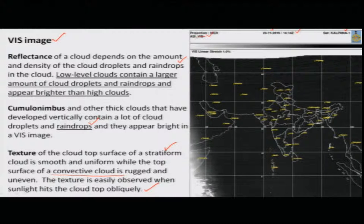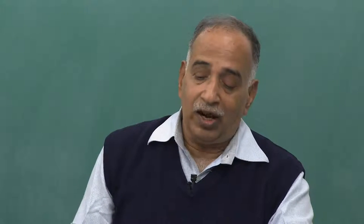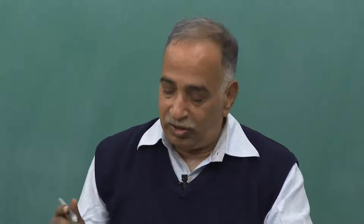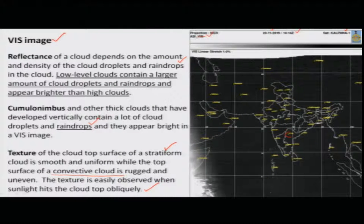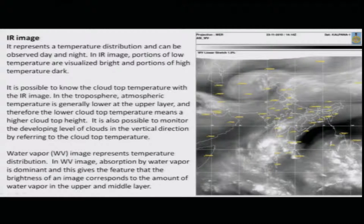You can get these cloud pictures from the IMD — Indian Meteorological Department — website. You can go and watch these pictures regularly. For example, if you are around Hyderabad, you look at Hyderabad and surrounding areas to see whether there are clouds or no clouds. This is how GIS information can be synergized with satellite data to read cloud patterns and texture, and assess whether there will be rain or no rain. Another type of information is from infrared images.